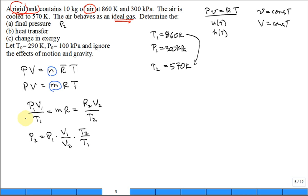Then what we would do is we'd substitute in. You would put in your 300 kilopascal, this volume ratio is just one, and then the temperature final temperature 570, the initial temperature is 860. You would calculate a final pressure and box it in. What units would it be? Kilopascal.